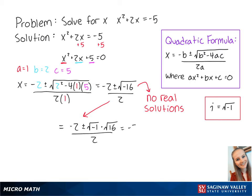This becomes negative 2 plus or minus 4i all over 2. If we divide the numerator by 2, we get negative 1 plus or minus 2i. So our x is equal to negative 1 plus 2i or negative 1 minus 2i. This is the final answer.